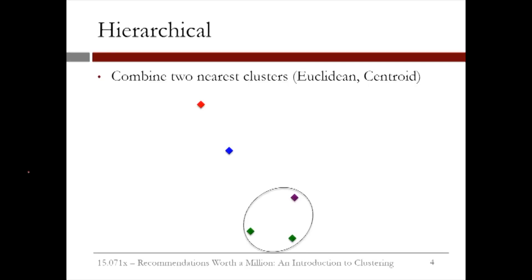Now this process repeats. We again find the two nearest clusters, which this time are the green cluster and the purple cluster, and we combine them into one cluster. Now the green cluster has three points, and the purple cluster is gone.